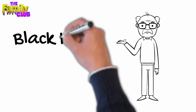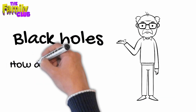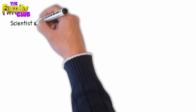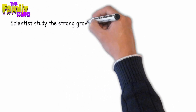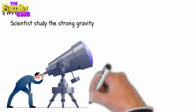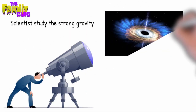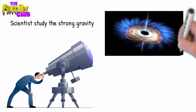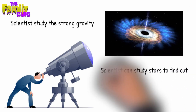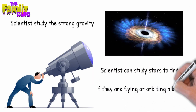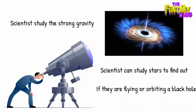If black holes are black, how do scientists know they are there? Scientists can see how the strong gravity affects the stars and gas around the black hole. Scientists can study stars to find out if they are flying around or orbiting a black hole.